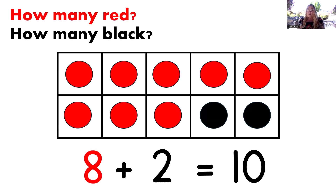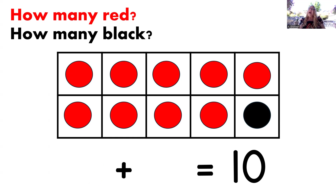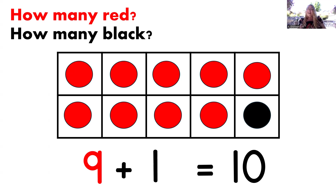You're doing a great job with these number combinations. How many dots are red now? That's right, nine red dots. And how many are black? Yes, just one. Now let's read that equation: nine plus one equals ten. Beautiful.